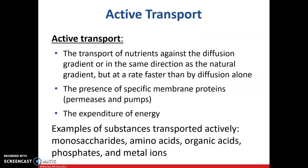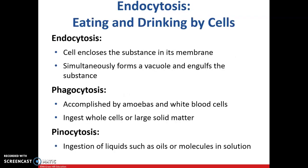The transport of nutrients against the diffusion gradient or the concentration gradient requires the presence of specific membrane proteins, and there is energy involved. We have endocytosis, phagocytosis, and pinocytosis — types of transport to bring substances into the cell. Endocytosis is when the cell encloses the substance into its membrane, forming a vacuole and engulfing it. Phagocytosis is accomplished by amoebas and white blood cells, which ingest whole cells or large pieces of matter. Pinocytosis is the ingestion of liquids from outside the cell, bringing them in.